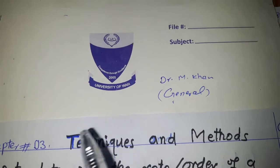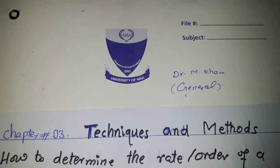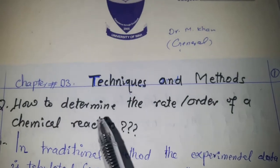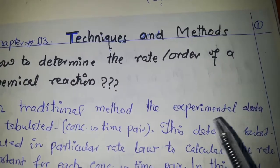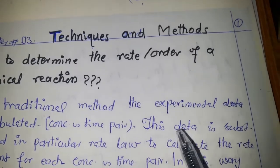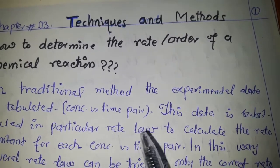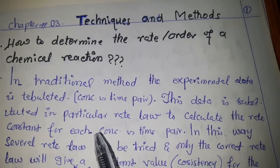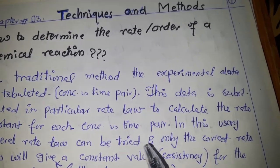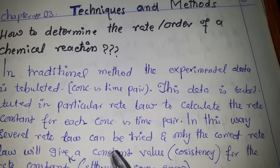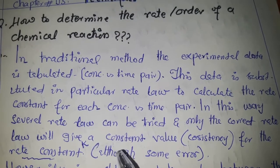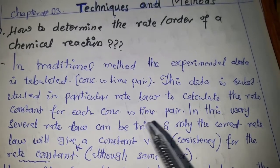Today we are going to start a new chapter of chemical kinetics covering the techniques and methods used to determine the rate and order of a chemical reaction. In traditional methods, experimental data — concentration versus time pairs — is substituted into a particular rate law equation to calculate the rate constant for each pair. Several rate laws can be tried, and only the correct one will give a consistent, constant value for the rate constant.